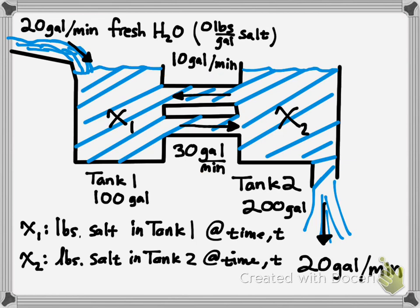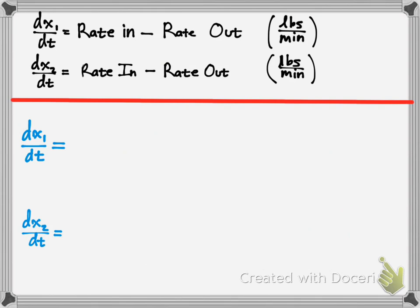You can set up a system of differential equations to solve. We're going to let x1 be the pounds of salt in tank one at a certain time, and x2 equal the pounds of salt at time t. To make life simple, all you've got to do is find the rates. So you do rate in minus rate out, and obviously a rate is a function of time.